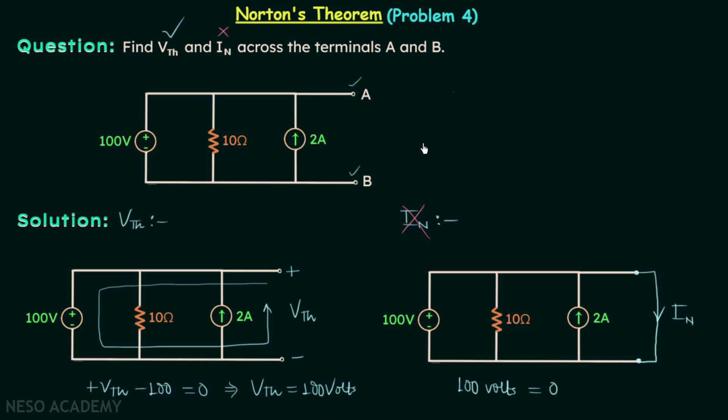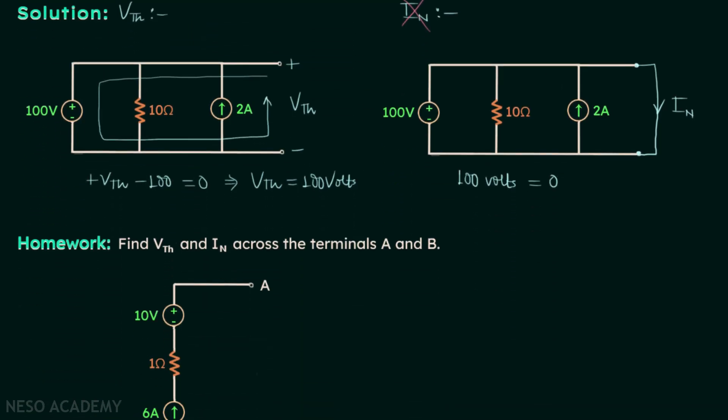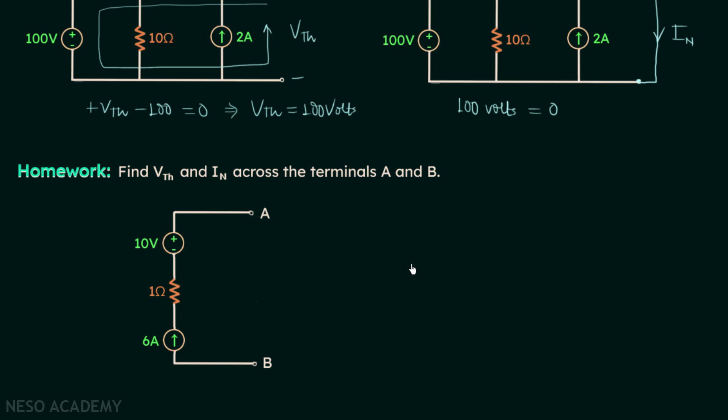So this is all for this question. Now we will move on to the homework problem. In this homework problem, you need to find Vth and In across terminals A and B. Once you have your answer, try to post it in the comment section.